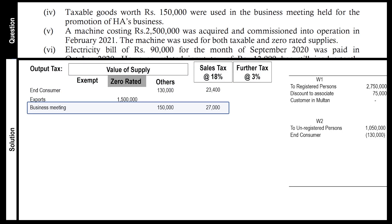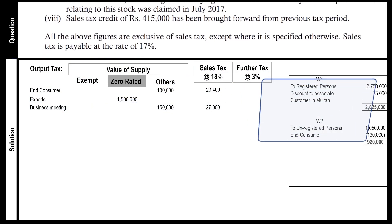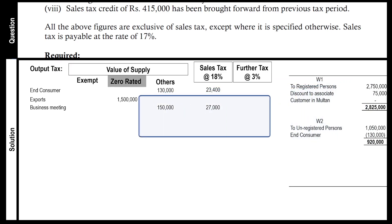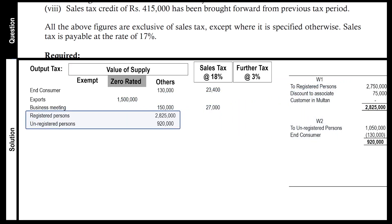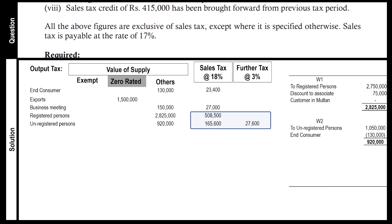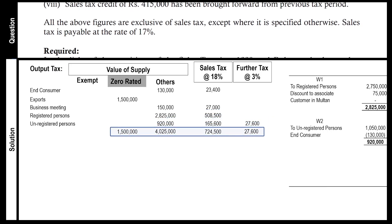Information about sales is complete now. We can now finalize our workings — make totals and mention the total in the output tax calculation. Calculate sales tax at 18%, and also calculate further tax at 3% on sales to unregistered customers. Output tax calculation is complete now.